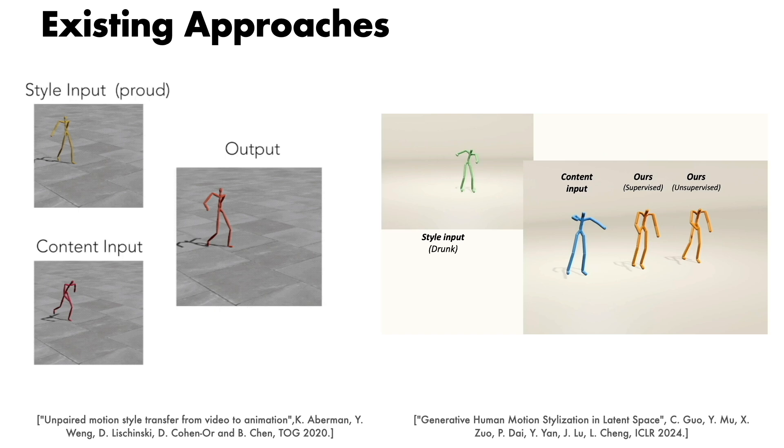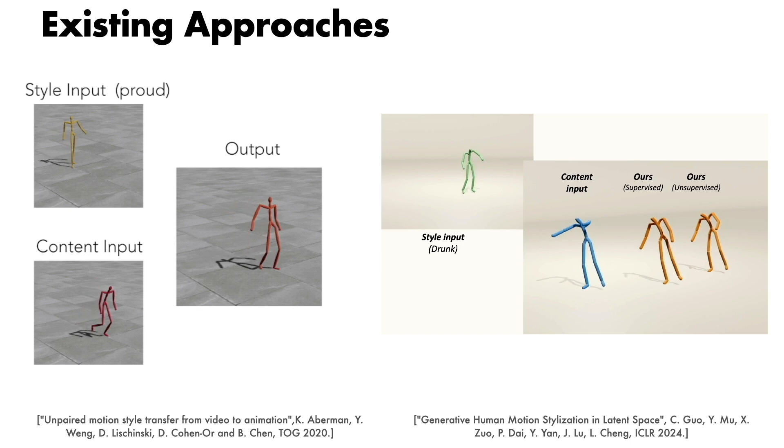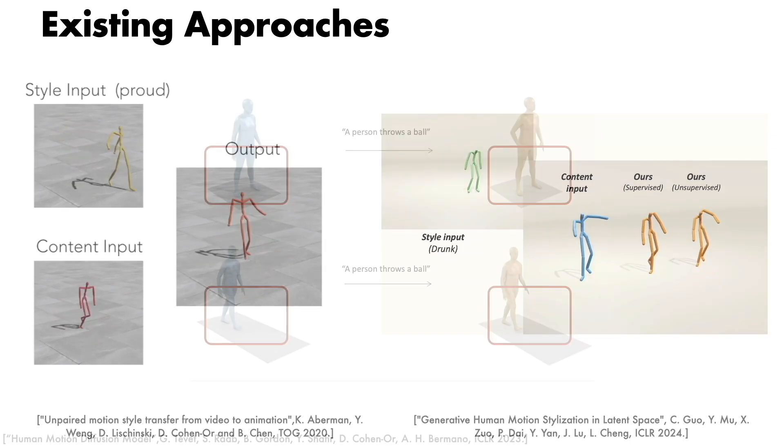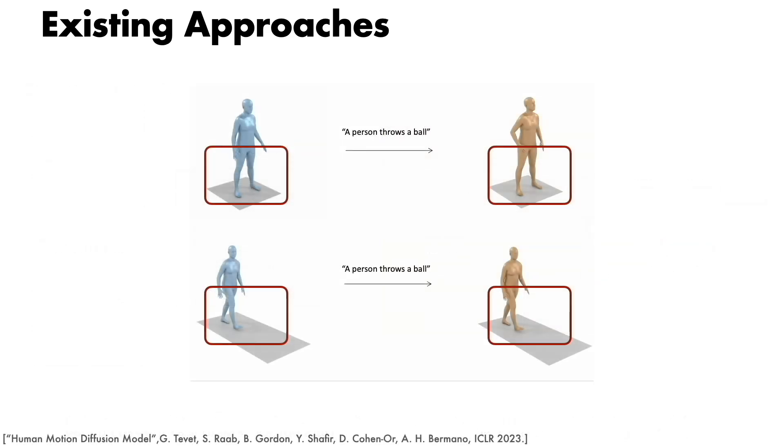Traditional approaches are mainly focused on a limited set of styles and transfer it to the output animation. Recently, diffusion-based approaches are using the in-painting capability of diffusion and manually copy a part of the source animation and edit the rest.